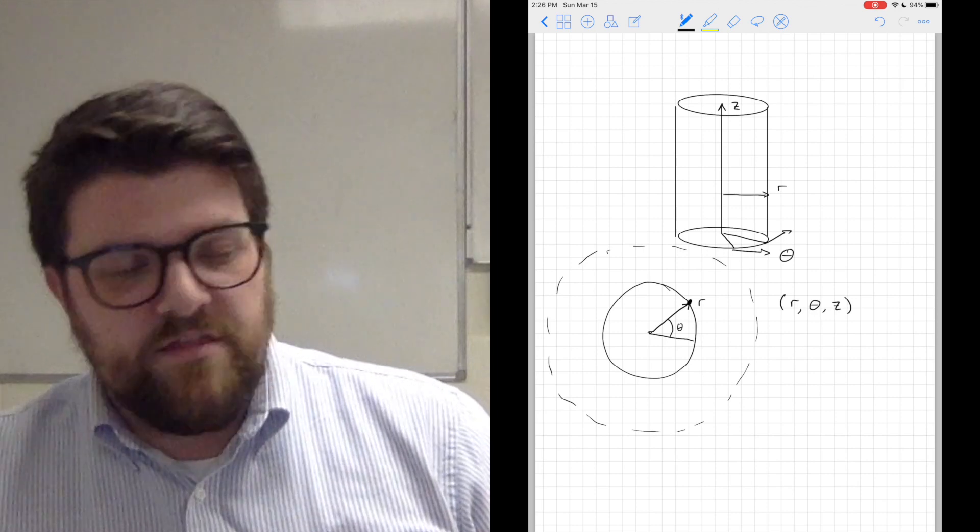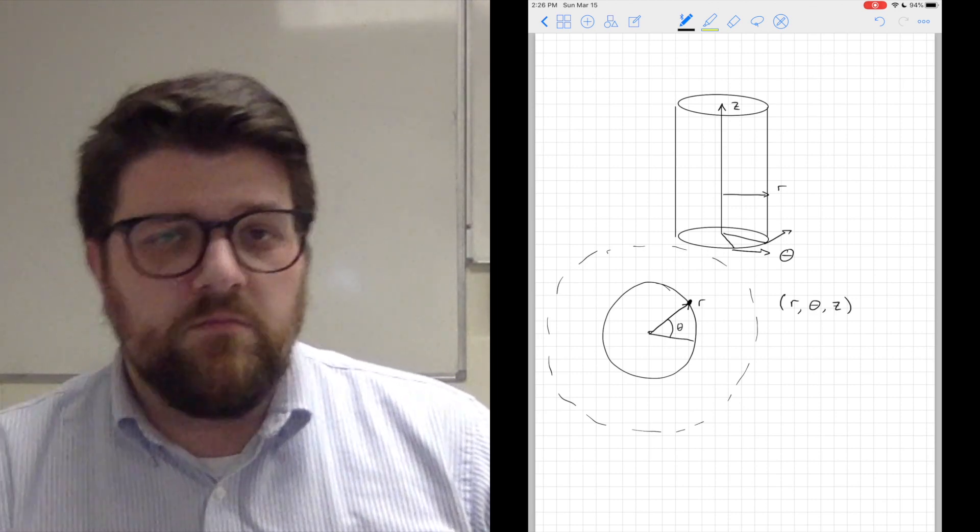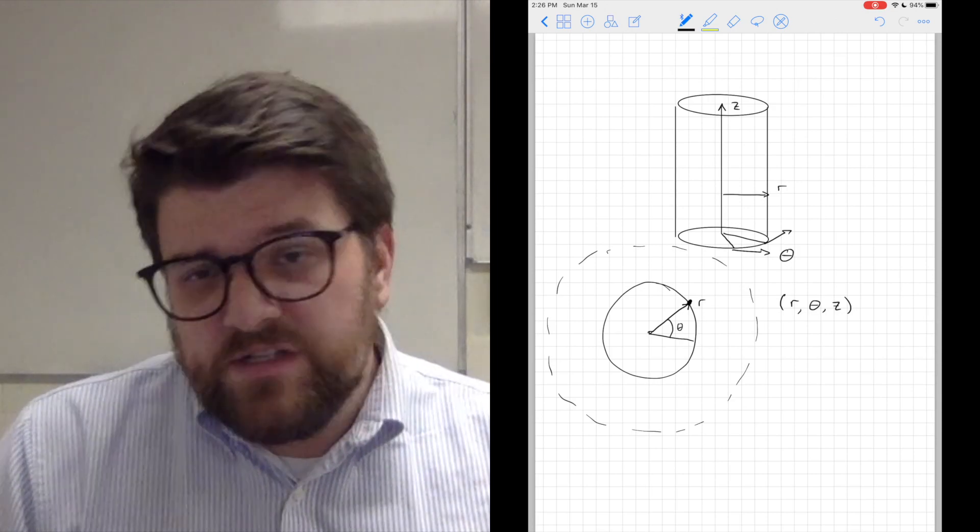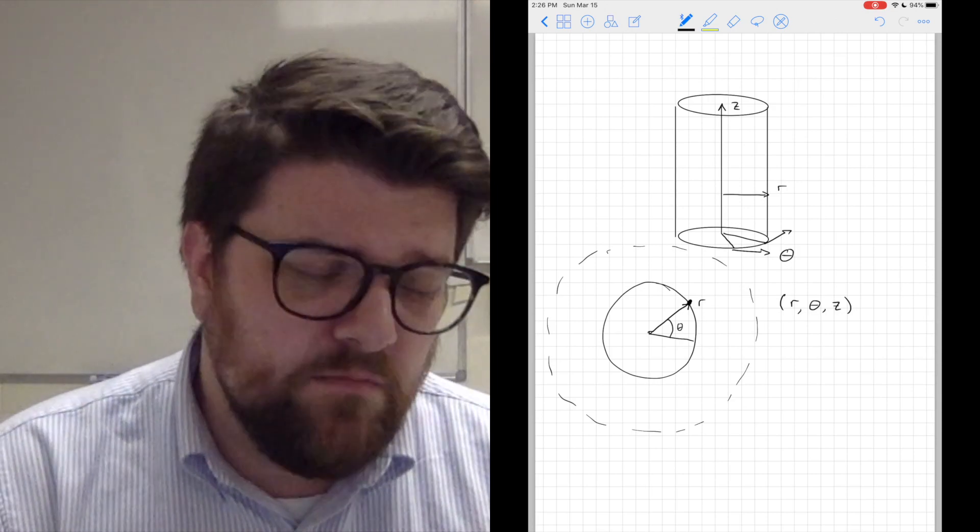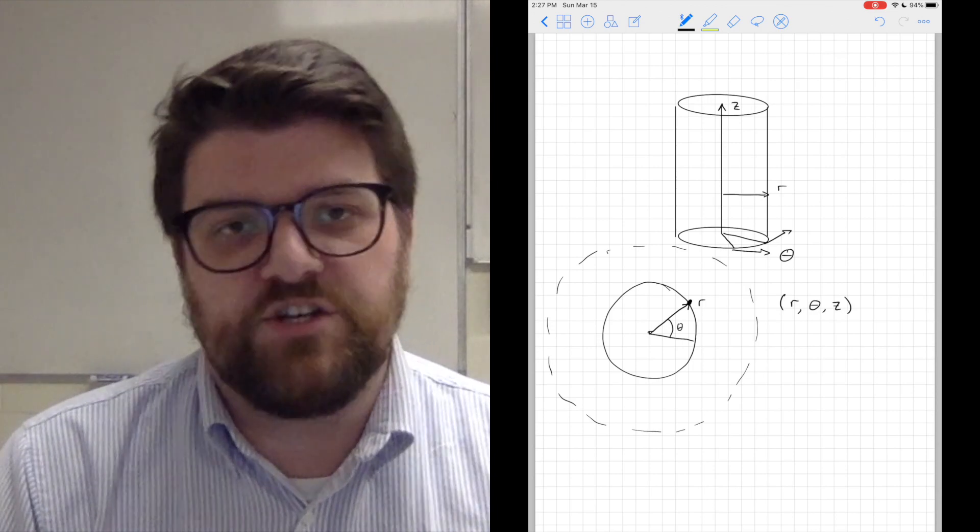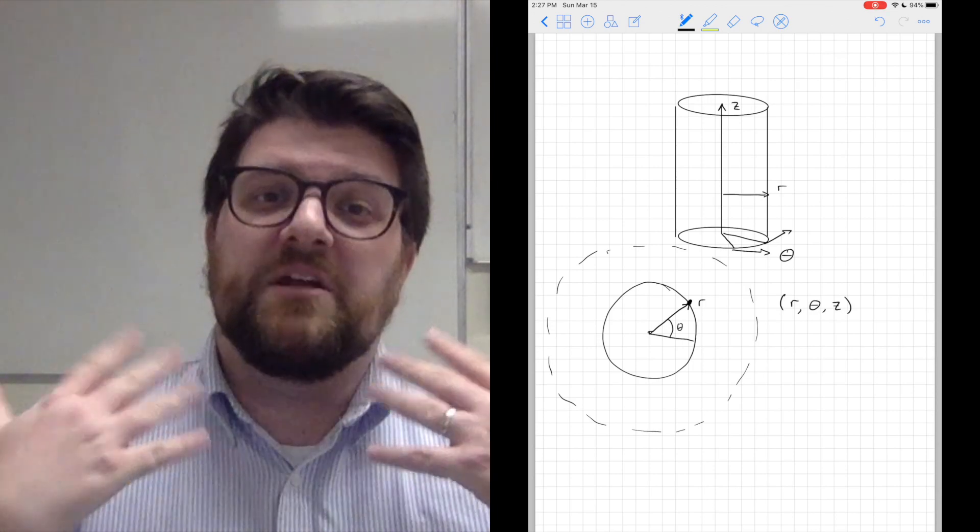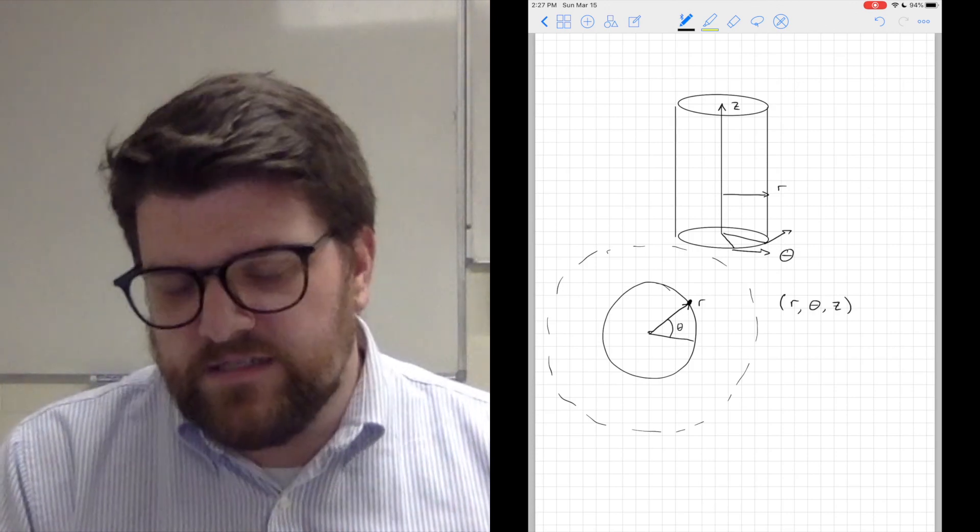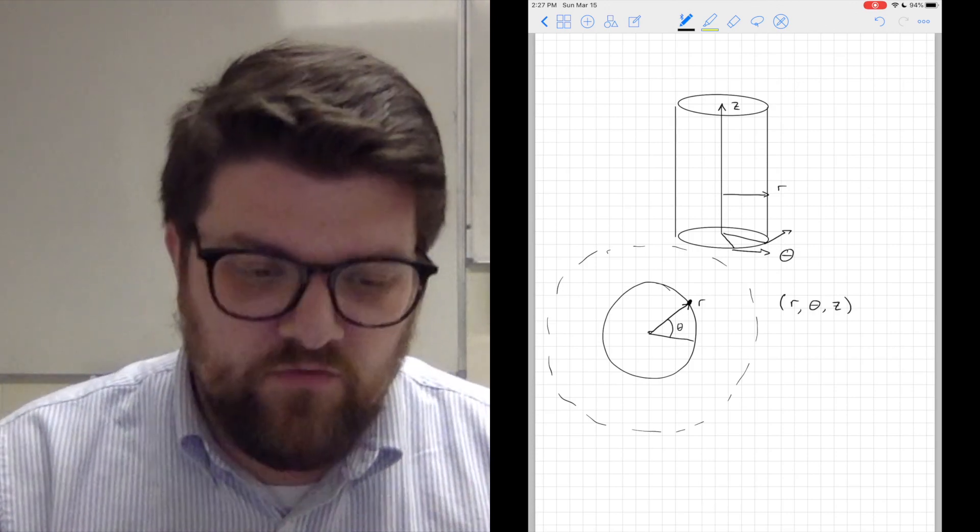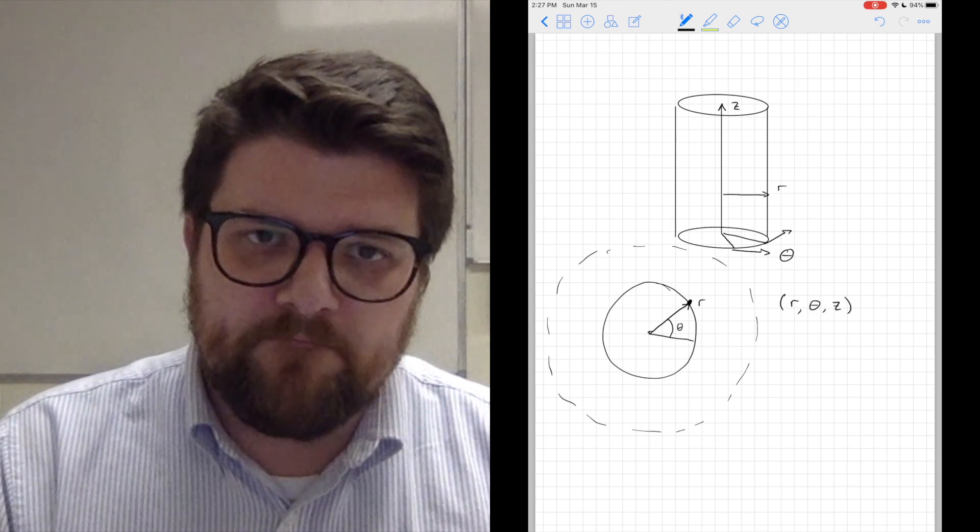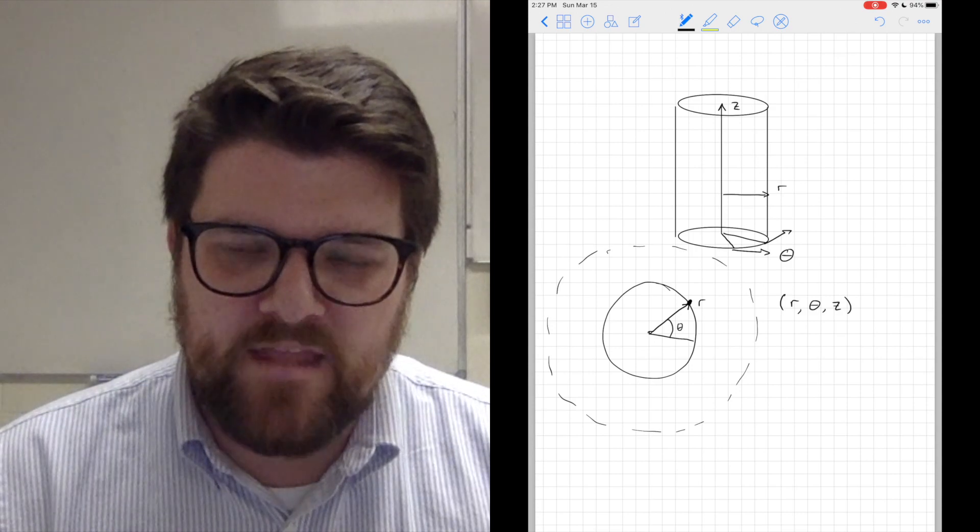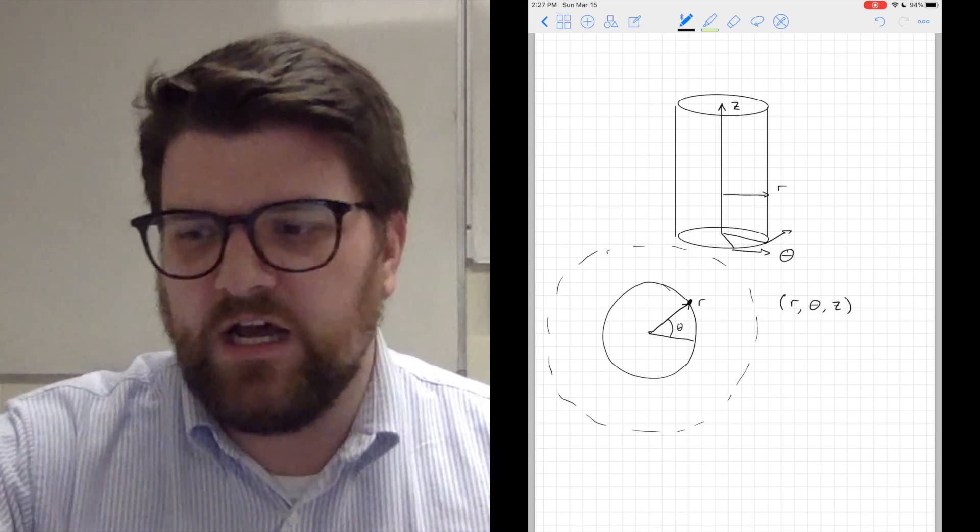We're actually going to use R, theta, Z a little bit more than X, Y, Z in this chapter. Notice that Z is common for both. It's really the X and Y that are changing. Because in the X, Y plane, we're talking about a polar coordinate system, a circular system of coordinates rather than a rectangular one. That's the intro for Chapter 8. Thank you for watching, and I hope to see you soon in another video.